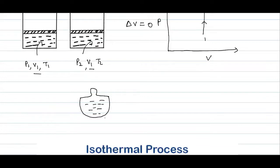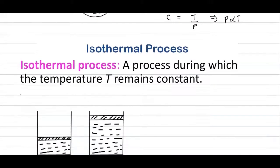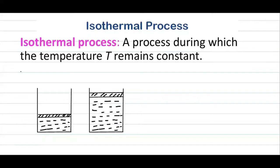In the Otto cycle, heat addition and heat rejection processes also take place at constant volume. Now, in the context of the ideal gas equation PV = mRT, with volume V constant and m and R already constant, we get V divided by mR equals a constant C, so T divided by P equals C. Therefore P is proportional to T, which is Gay-Lussac's Law.